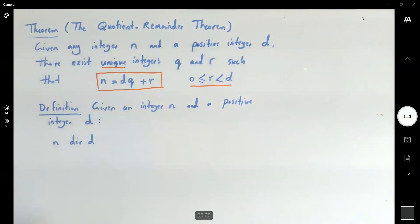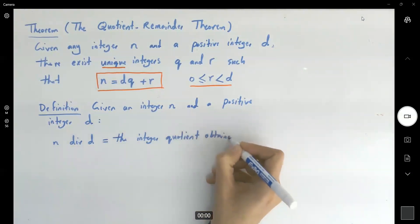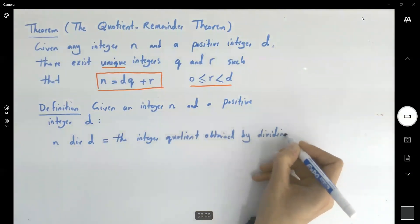When you write n div d, this gives us the integer quotient obtained by dividing n by d. So the outcome is an integer. Quotient obtained by dividing n by d.